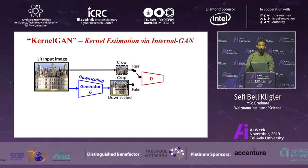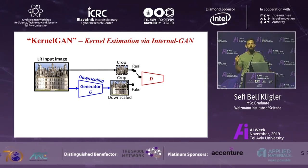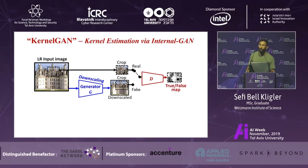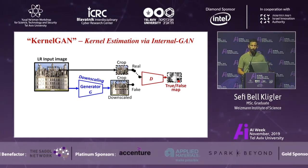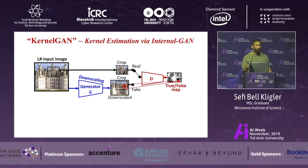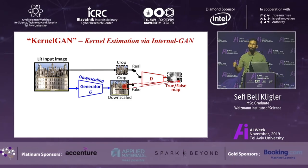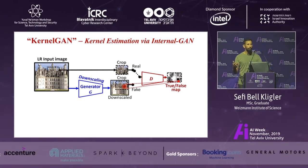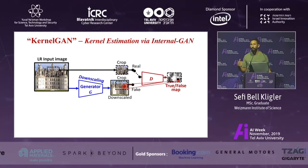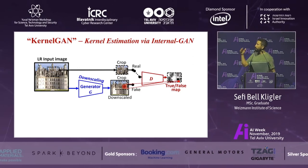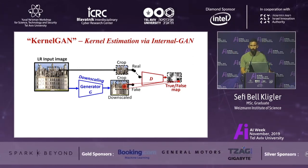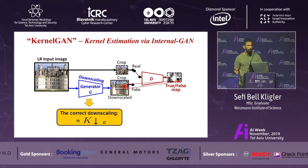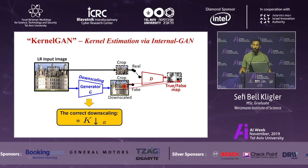The discriminator doesn't output a single number as in a classical GAN — it outputs a map where each pixel represents how likely the patch it came from is real or fake, distinguishing for every patch whether it's real or fake. If the discriminator cannot distinguish between real crops from the input image and fake crops from the generator, it means the patch similarity is maximized — the patches reoccur in the real image as much as in the fake downscaled image. In that case, the generator is imitating exactly the correct downscaling, modeling exactly the super-resolution kernel.